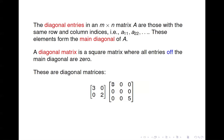Off the main diagonal, you have all 0s. It's okay to have a 0 on the diagonal — we really don't care what's on the diagonal. We just want 0s off the diagonal.